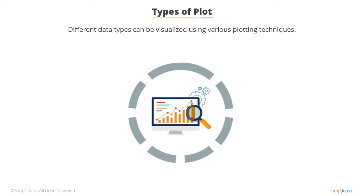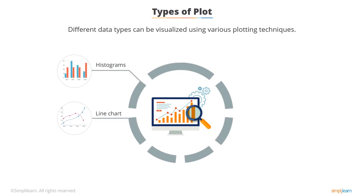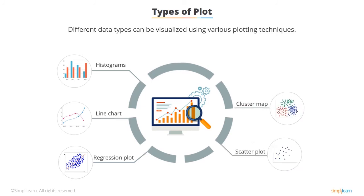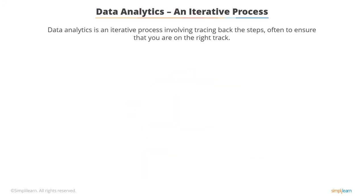Sometimes more than one plot is used to develop a better understanding of the data. When there is new data or you have not worked with such data before, you can use more than one plot. Following are a few high-level plot selection techniques: if the data is continuous — histogram, line chart, regression plot; if the data is categorical or you need to identify patterns — scatter plot, cluster map, heat map.